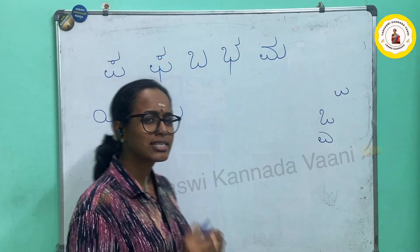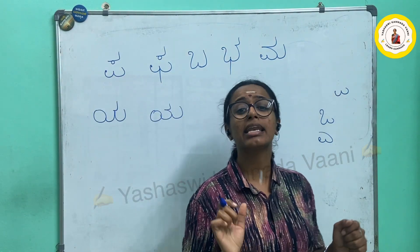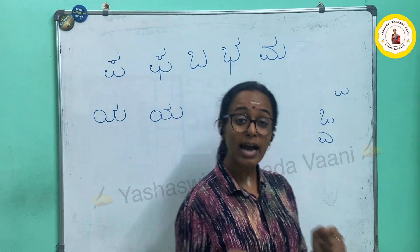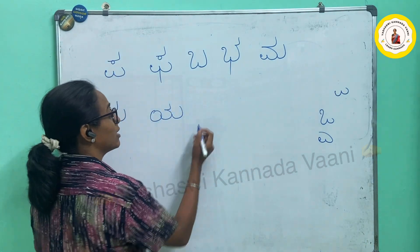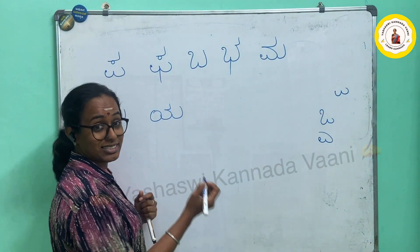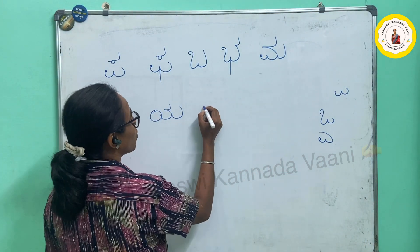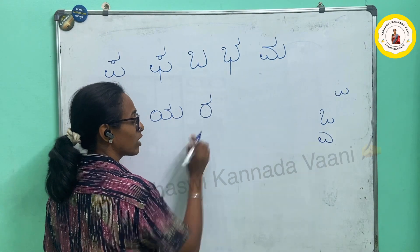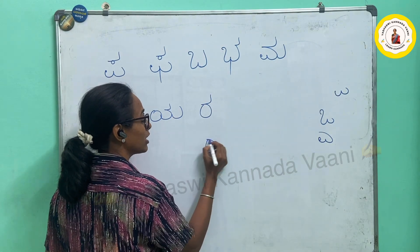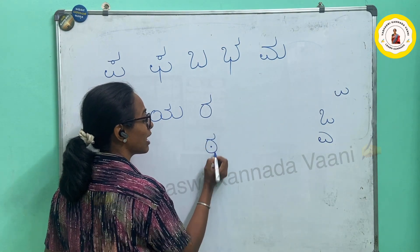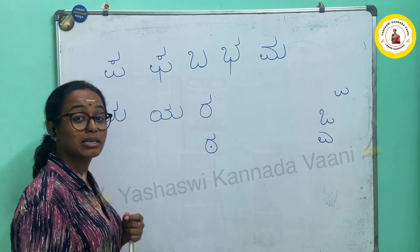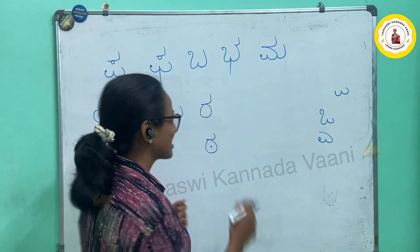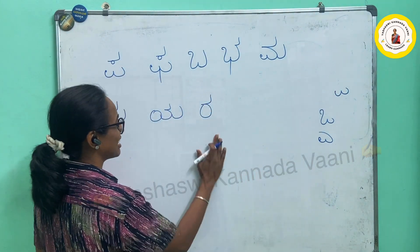The next one is very simple — RA. RAGI, RA. So very simple: zero and a TALYA. If I put a dot into this, what will happen? It will become letter DA. This is letter RA.